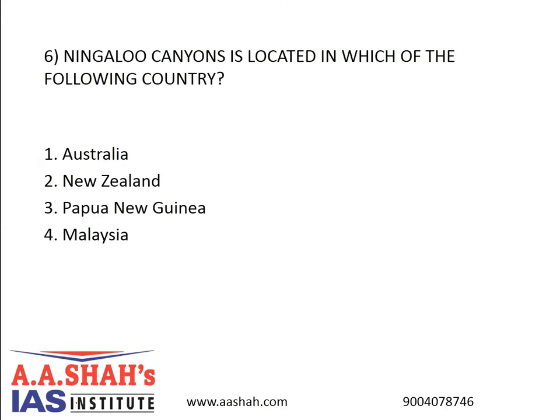Question 6. Ningaloo Canyons is located in which of the following countries? 1. Australia, 2. New Zealand, 3. Papua New Guinea, 4. Malaysia. The correct answer is A, Australia. An estimated 150-foot siphonophore, seemingly the longest animal ever recorded, was discovered during a month-long scientific expedition exploring the submarine canyons near Ningaloo. Additionally, up to 30 new underwater species were identified by researchers from the Western Australian Museum. The discovery of the massive gelatinous string siphonophore — a floating colony of tiny individual zoeids that clone themselves thousands of times into specialized bodies that work as a team — represents the deepest fish and marine invertebrates ever recorded for Western Australia.